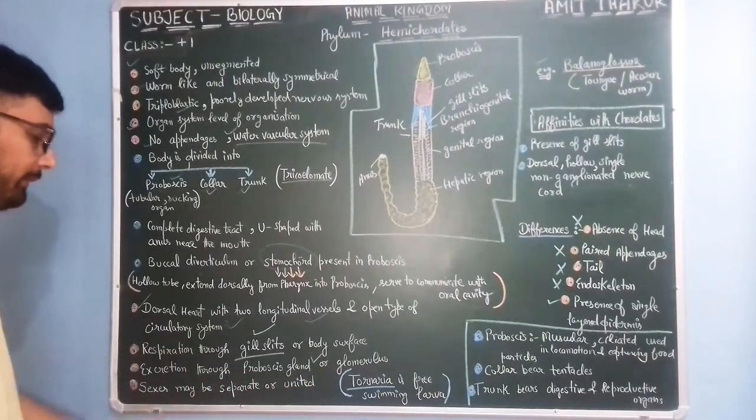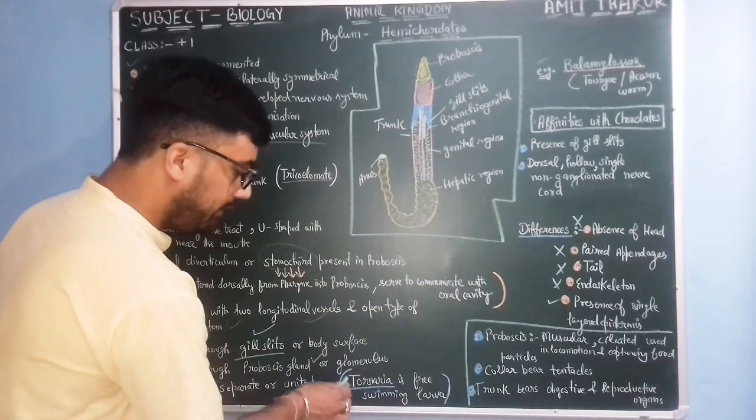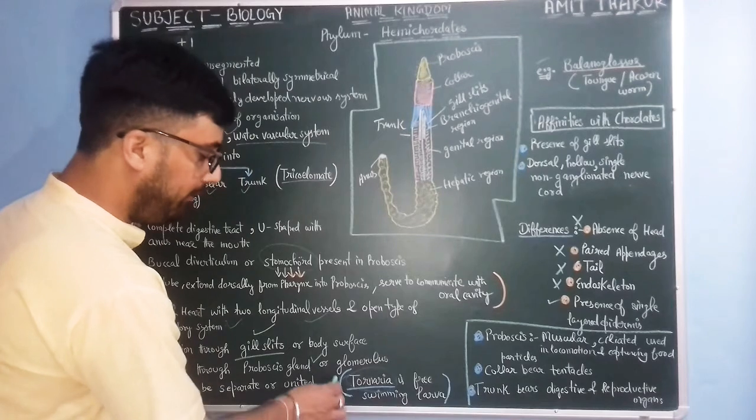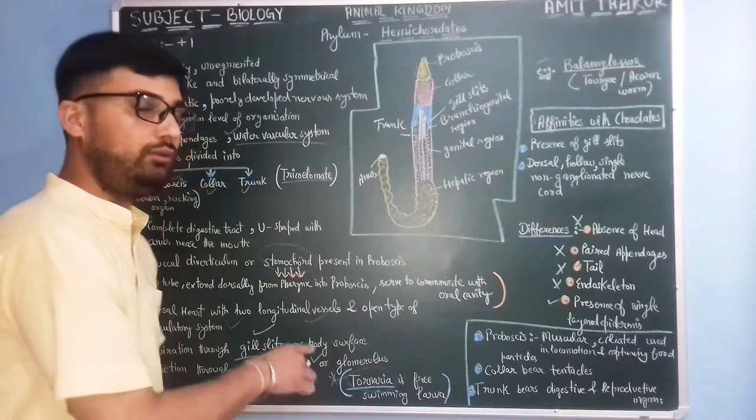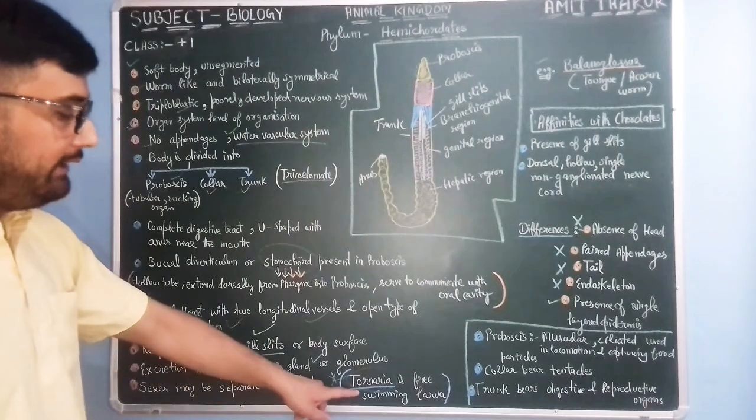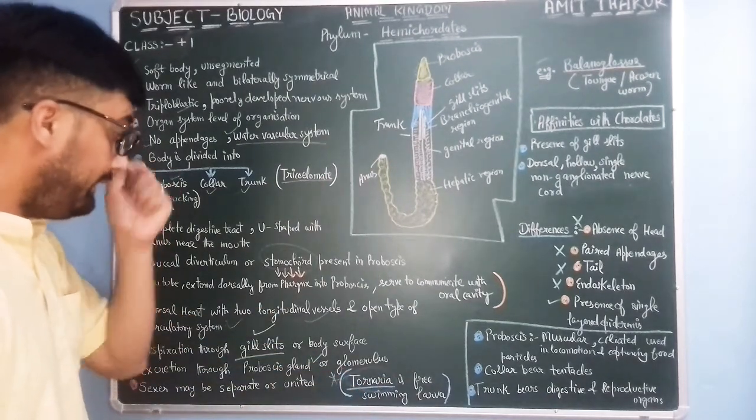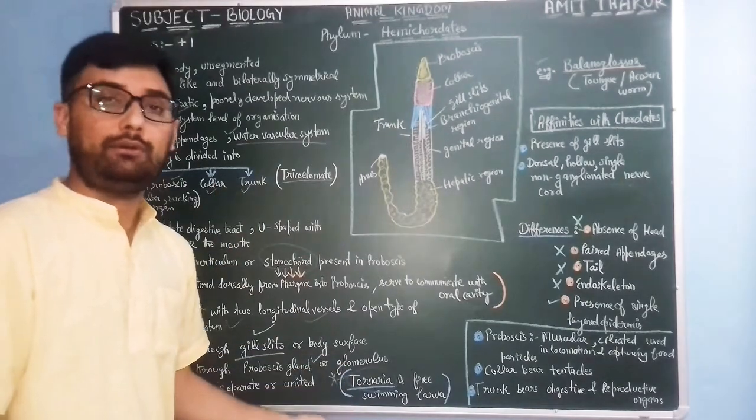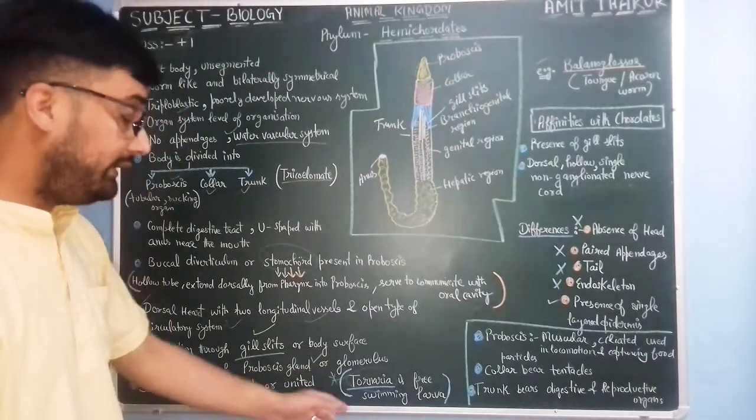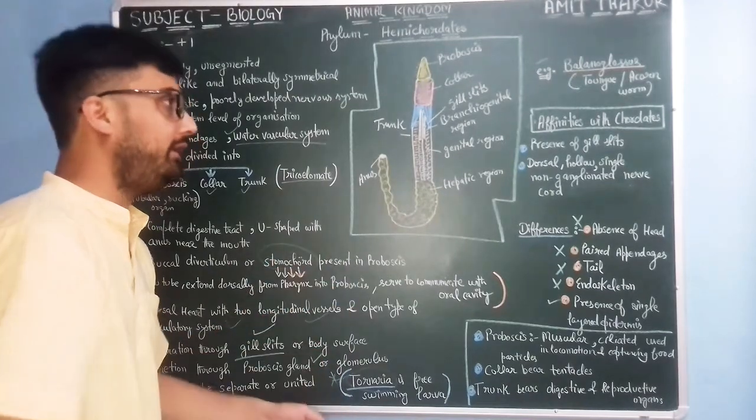Sexes may be separate or united. The larval form is tornaria larvae. Tornaria is very important - tornaria is a free-swimming larva of hemicordates, and this tornaria larva is structurally very similar to bipinnaria larvae of starfish. So another feature connecting to echinodermates or non-chordates.